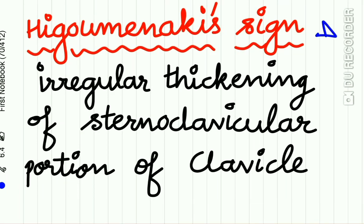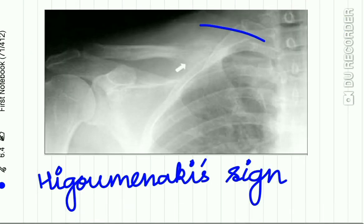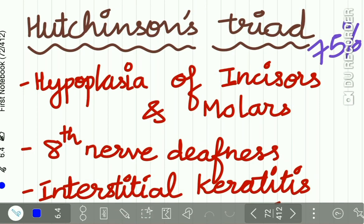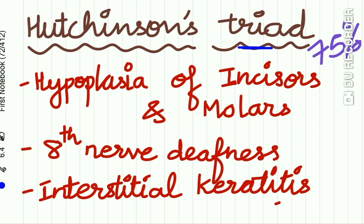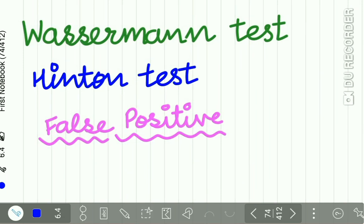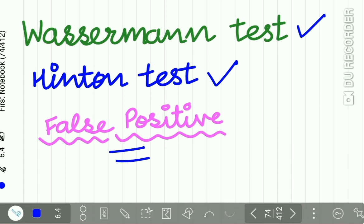Higoumenakis sign is seen in patients with syphilis, showing irregular thickening of the sternoclavicular portion of the clavicle — a feature of congenital syphilis. Hutchinson's triad consists of hypoplasia of the incisors and molars, eighth nerve deafness, and interstitial keratitis. Diagnosis is mostly done by the Wassermann test and Hinton test, though false positive results may occur if sampling is not done properly.